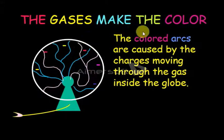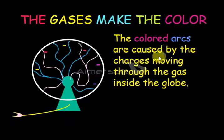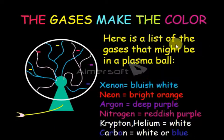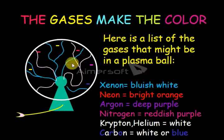The gases make the color. The color arcs are caused by the charges moving through the gases inside the globe. Here is a list of the gases that might be in a plasma ball.